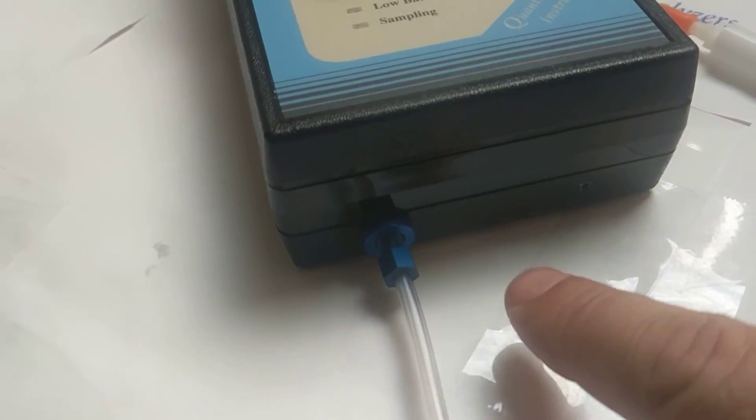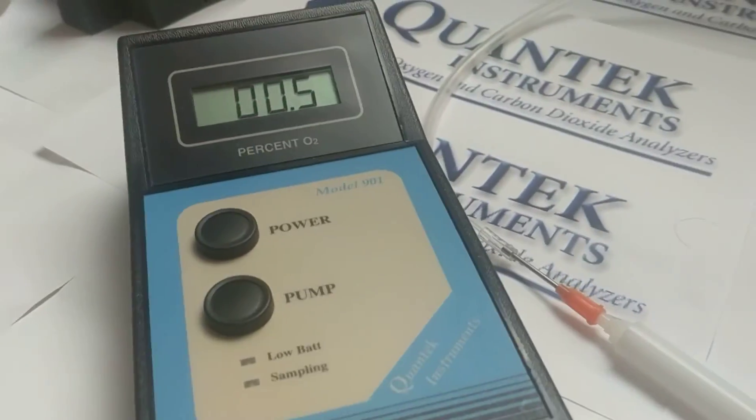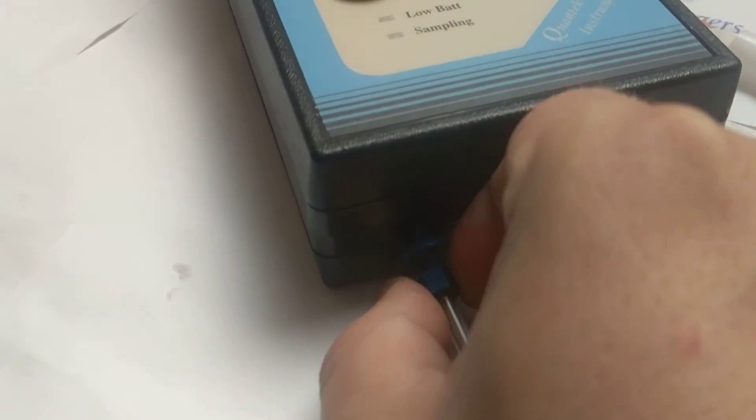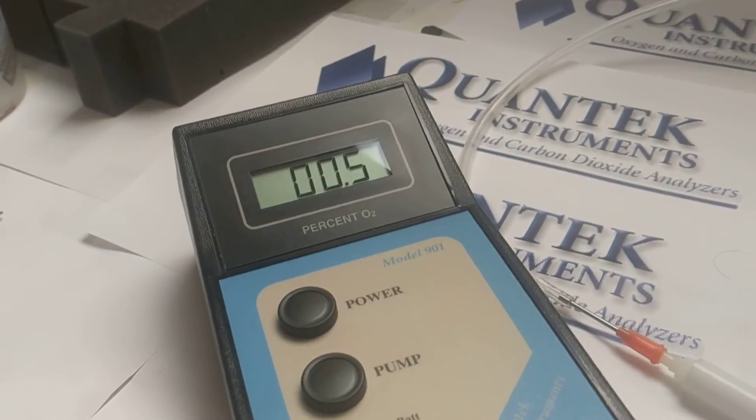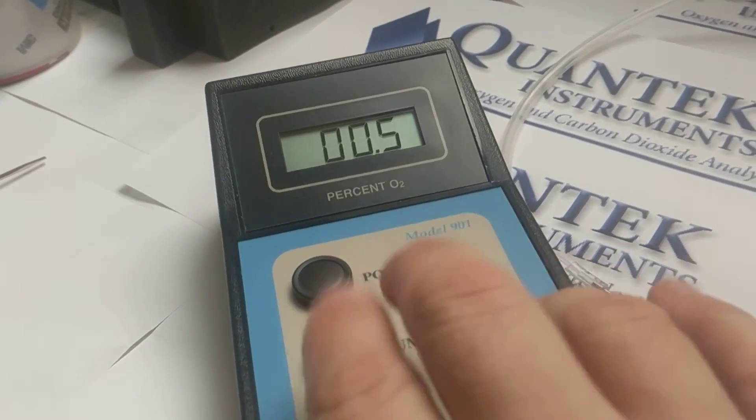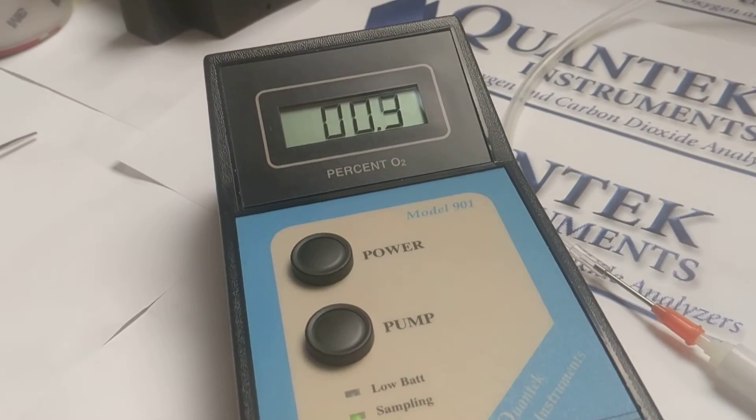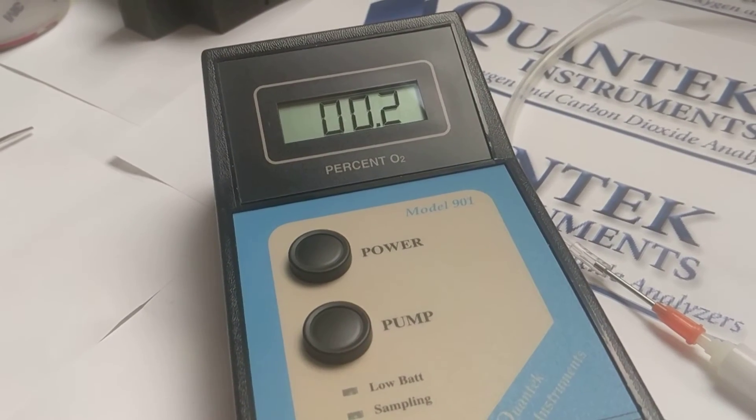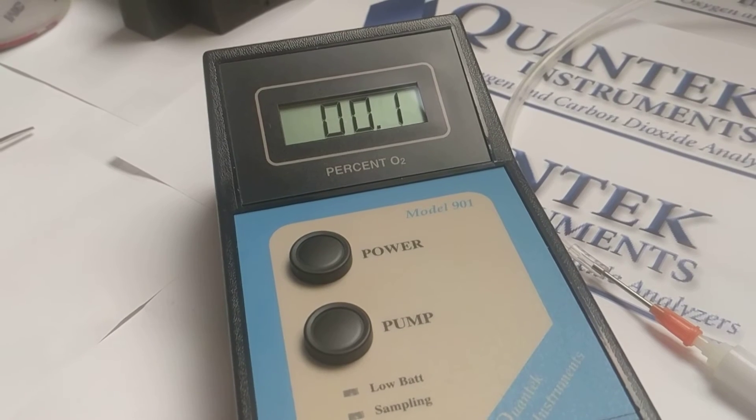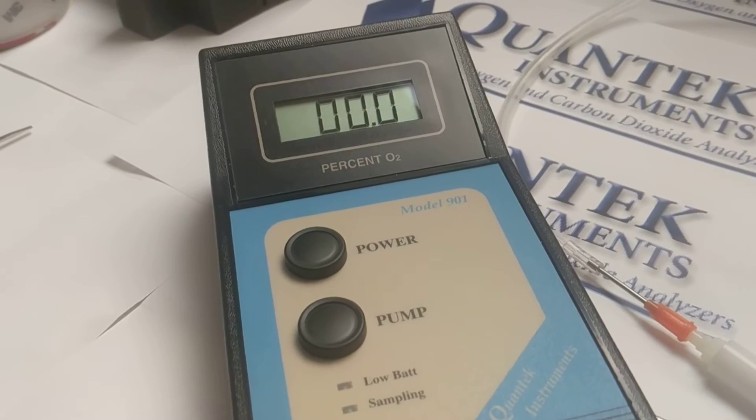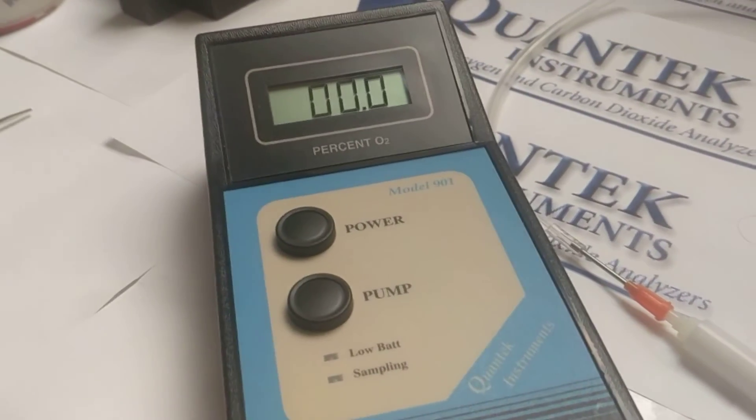So when the pump is drawing in sample, ambient air is getting in through these threads. So we're going to tighten up the threads here a little bit more. And we're going to press the pump button again, and hopefully we should end up at 0.1. In this case, we're off by a hair, but 0.0.